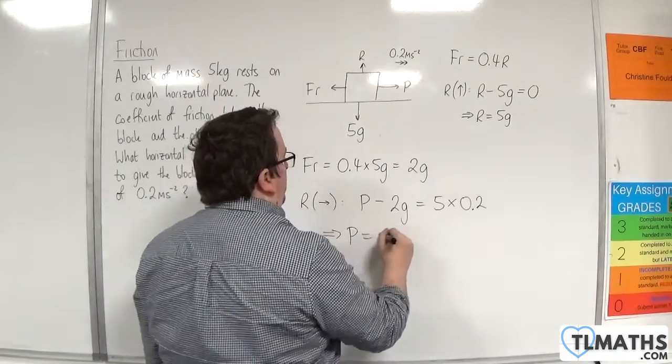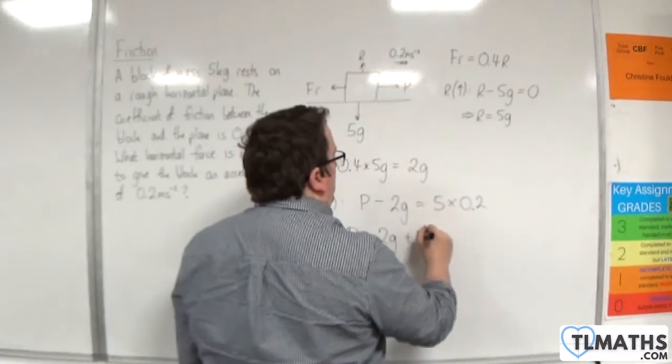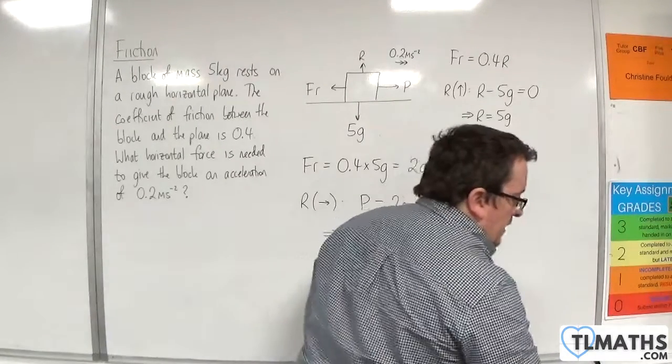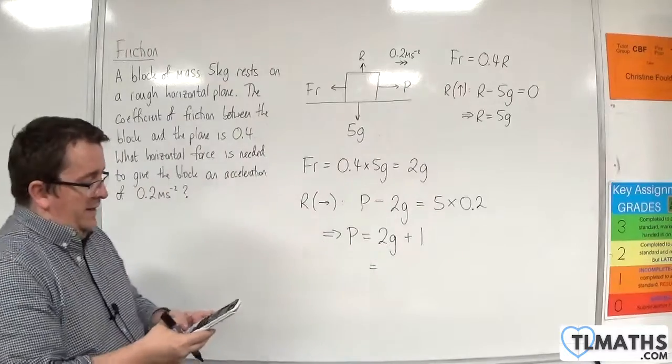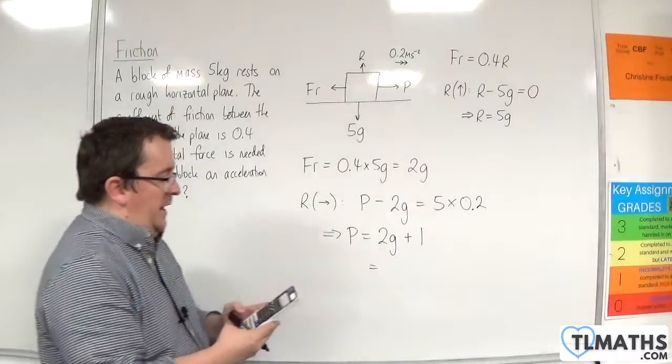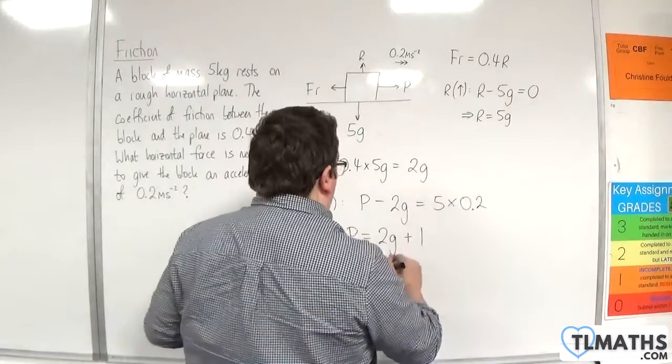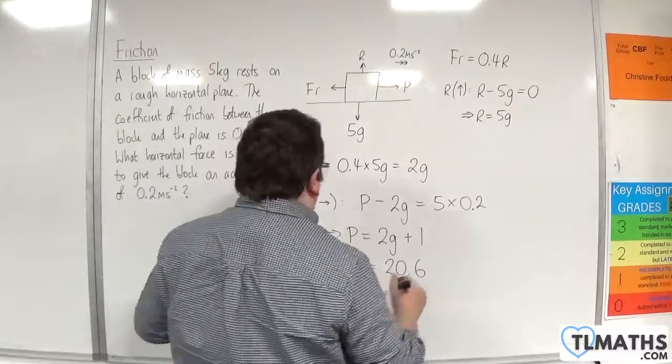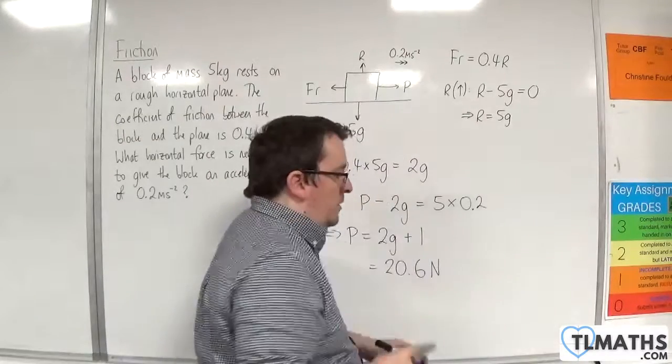P must be 2g plus 1. Using g as 9.8, that is going to be equal to 20.6. So the horizontal force needed is 20.6 newtons.